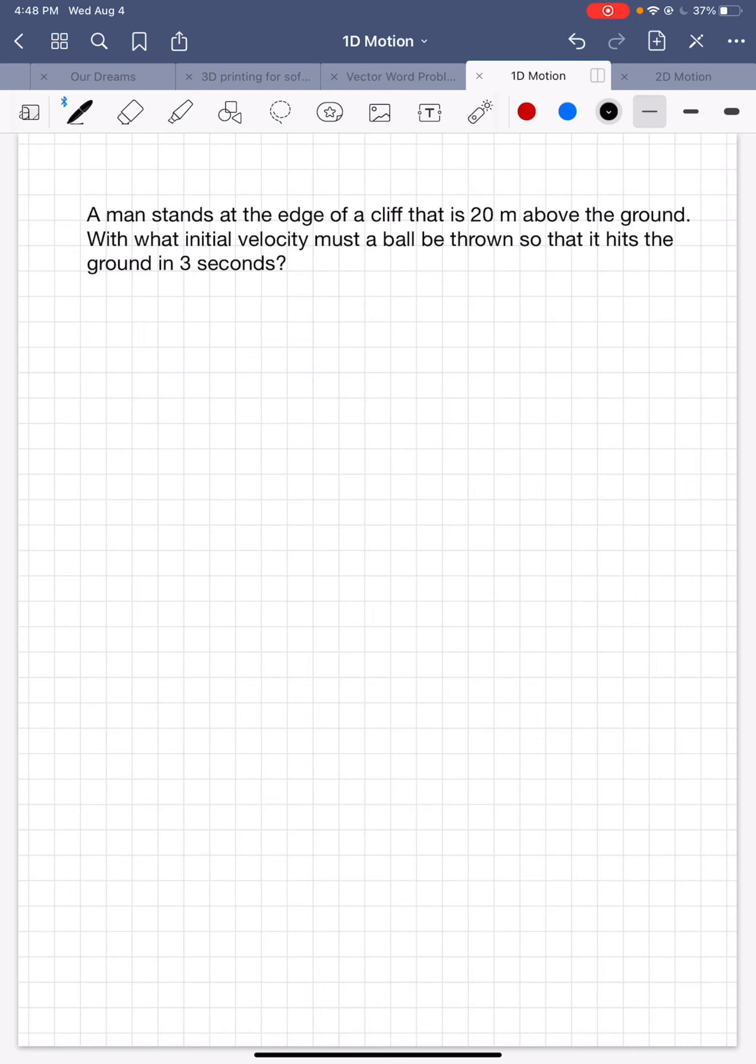All right, so first we need to understand the problem and what it's asking for. So what's it asking for? It's asking for an initial velocity. Now to find that initial velocity, I have to know what else it tells me. So it tells me I have an initial height of 20 meters, and that the time it takes for it to ground is three seconds.